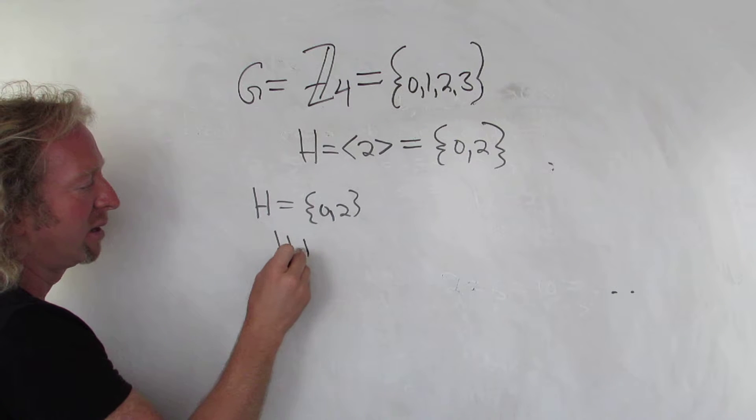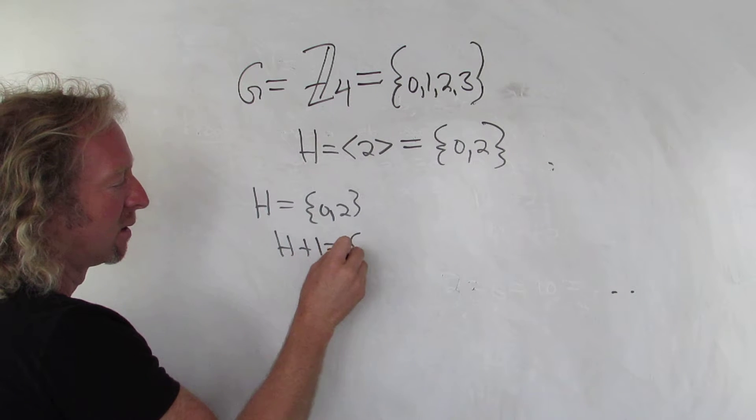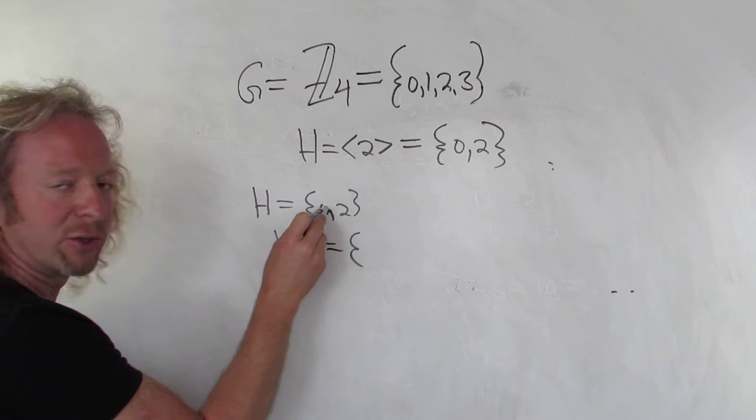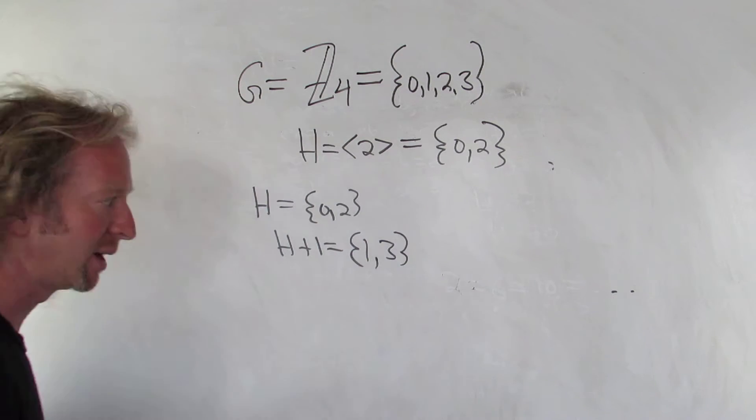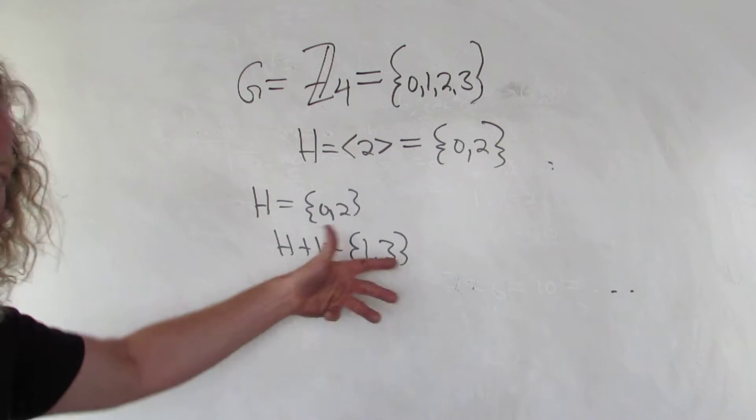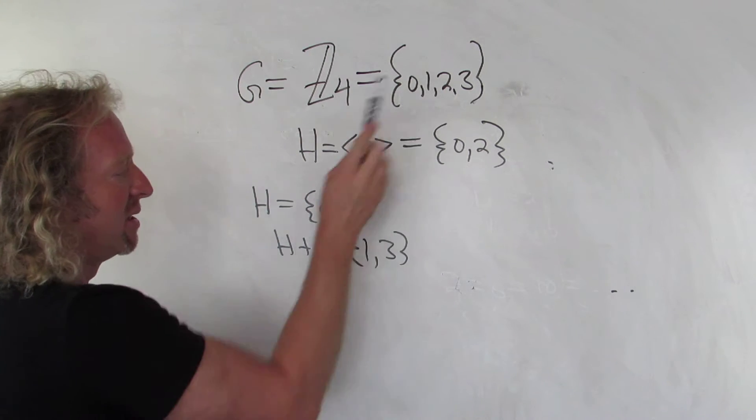And then H plus 1, so we're adding it, so 0 plus 1 is 1, 2 plus 1 is 3, so we're still good. At modulo 4, we're still good. I mean, 4 goes into those numbers 0 times the remainder. These guys are in Z4, no problem.